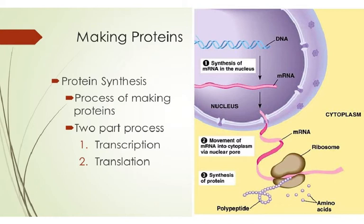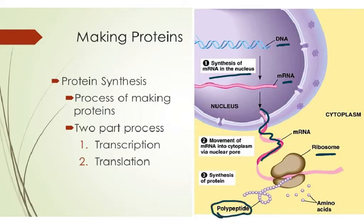Looking at a simplified diagram of protein synthesis: transcription takes place in the nucleus — the mRNA is transcribed from DNA and then leaves the nucleus. It attaches to the ribosome where the protein is synthesized. You can see the polypeptide chain being made as amino acids are brought in the right sequence. Ribosomes are the site of protein synthesis.